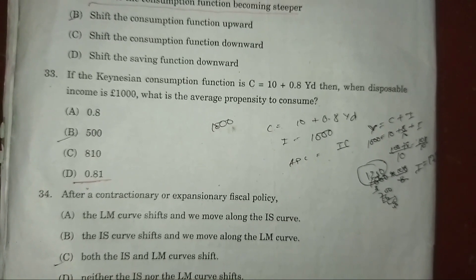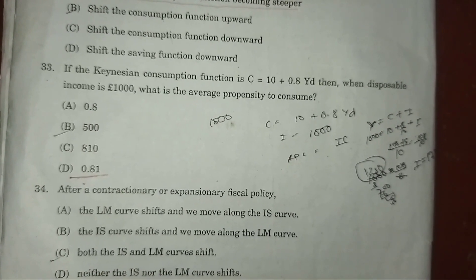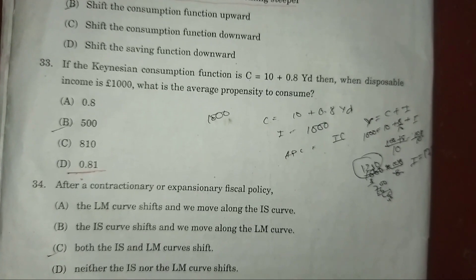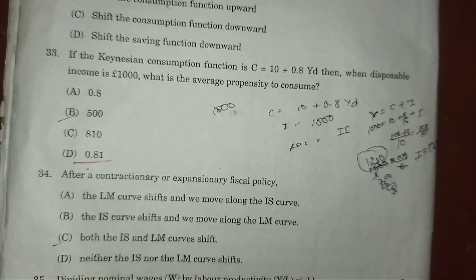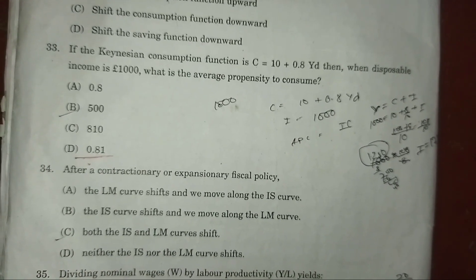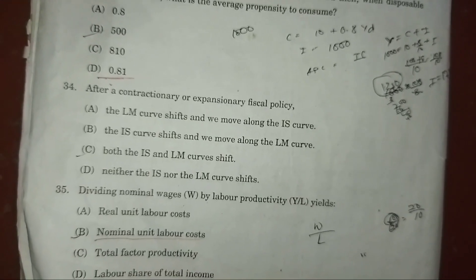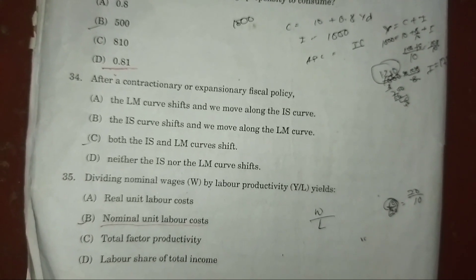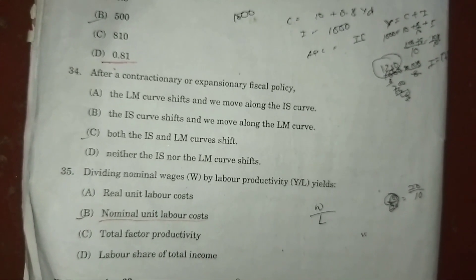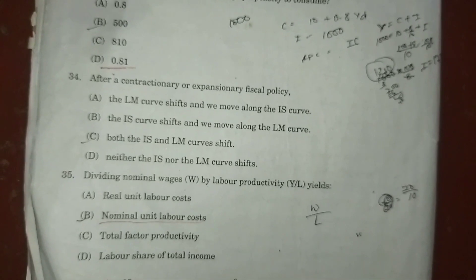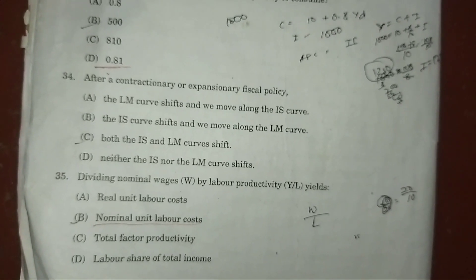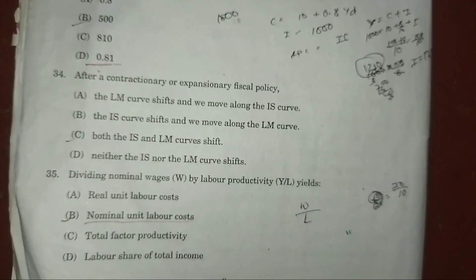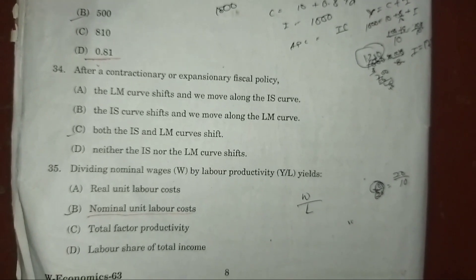Answer: D — 0.81. Question 34: After the contraction and expansion of fiscal policy — answer: B — the IS curve shifts and we move along the LM curve.